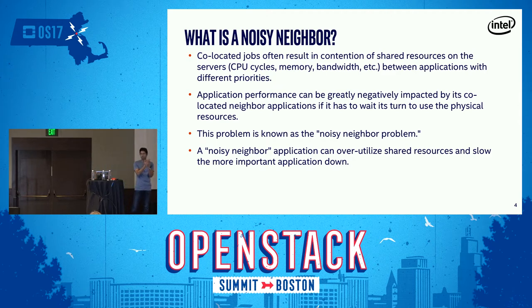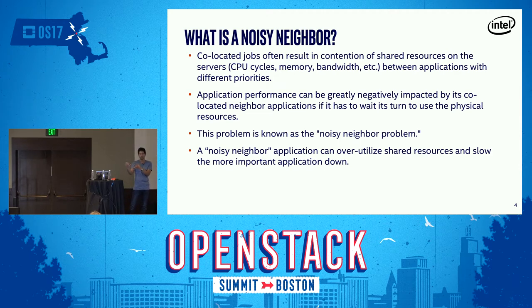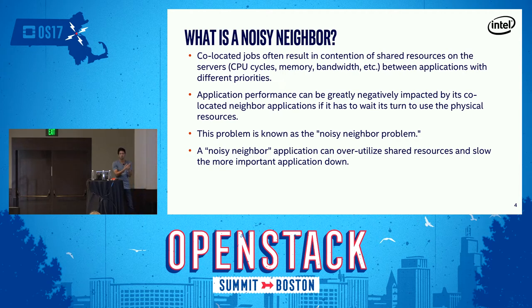Let me explain with a simple example. Say you have a server with just two VMs on it — a web application where one VM has a very important payment web service, and the other VM has an add-on like image morphing, which is not really important but needs a lot of computational power. When your image morphing runs, it's going to try to draw all the resources towards itself, which is going to affect your very important payment service. This is a simple example of a noisy neighbor.